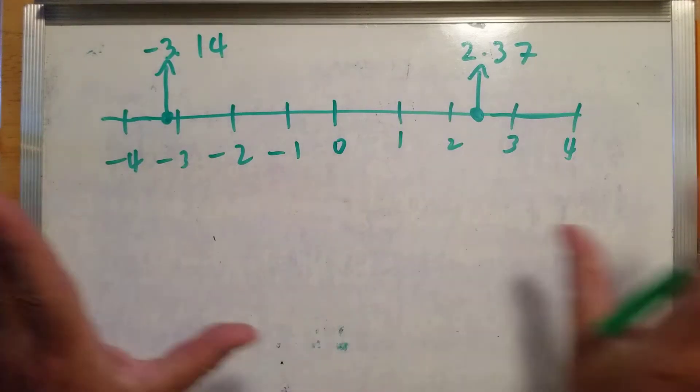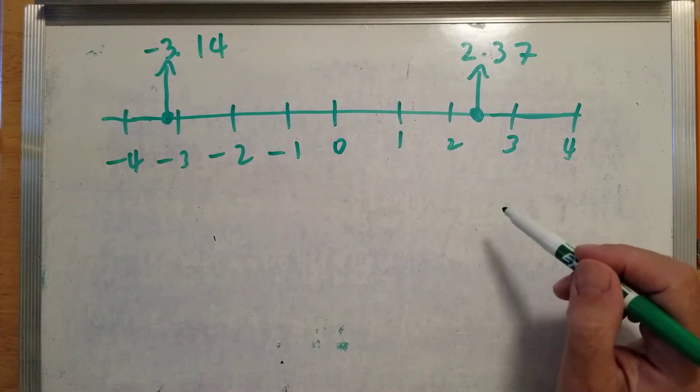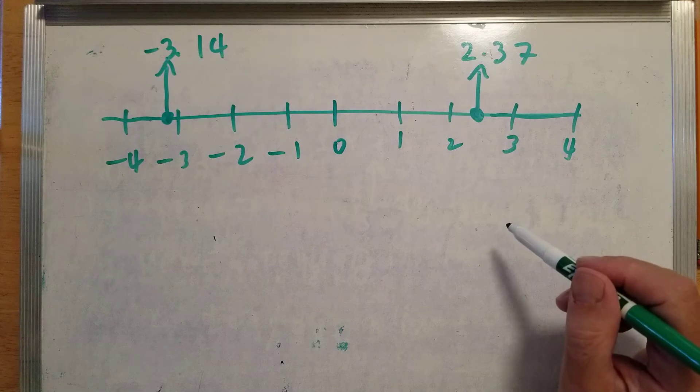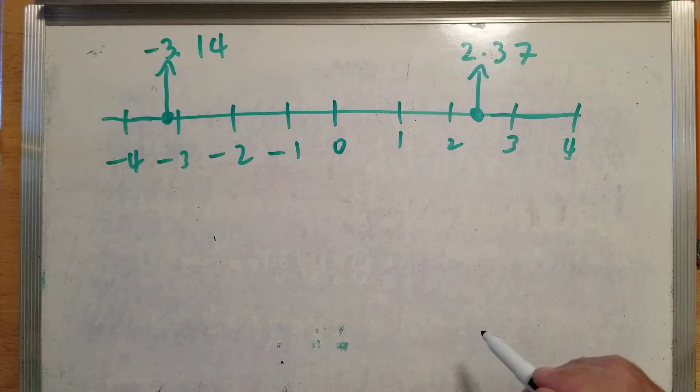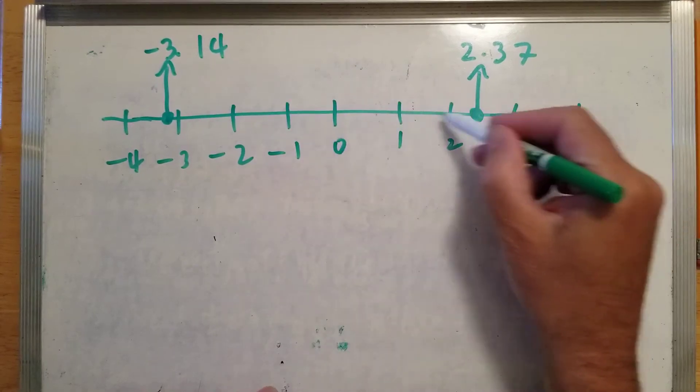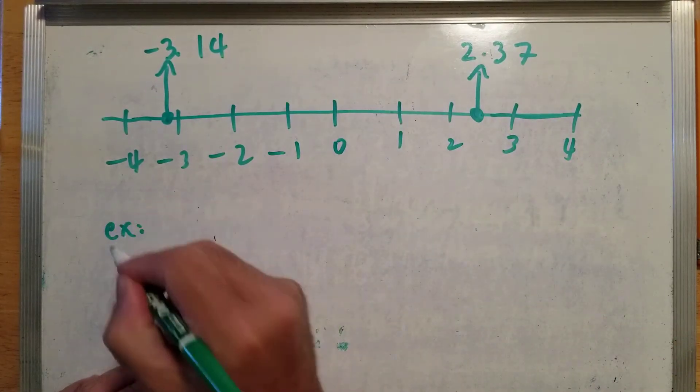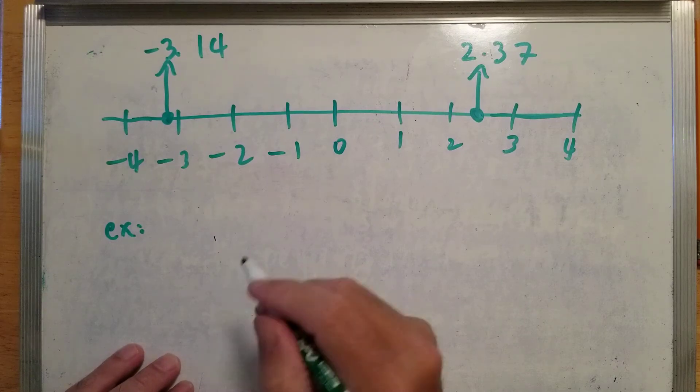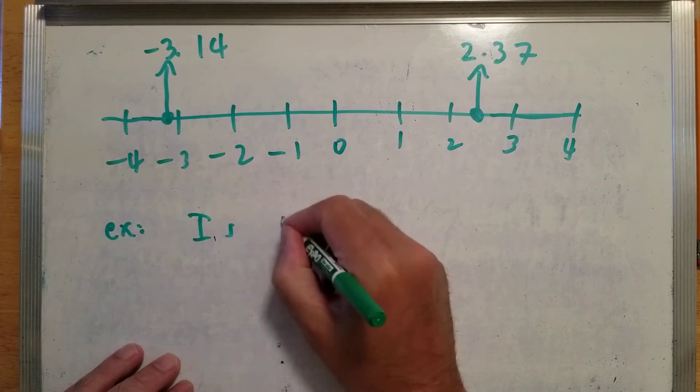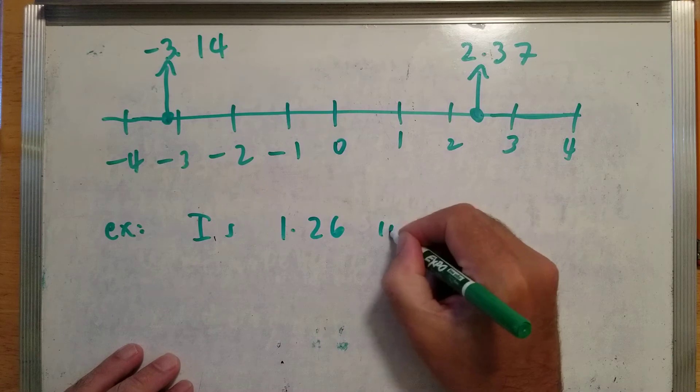Now, they want you to visualize the number line and determine whether another number is in between by placing it on the number line and seeing if it's in this region in between those two numbers. So, as an example, let's try: is 1.26 in between?